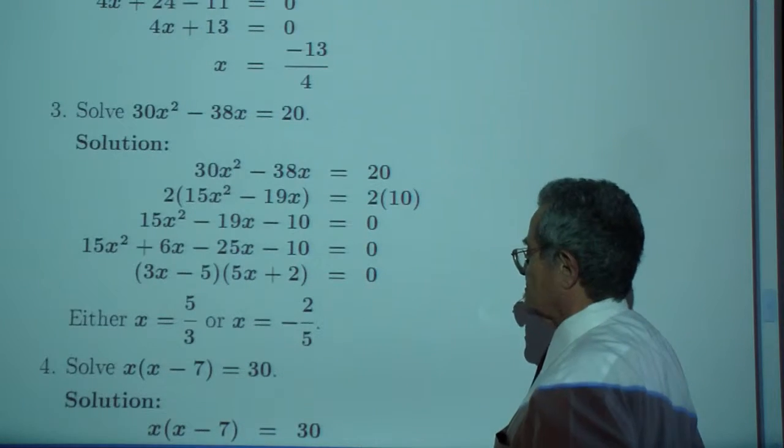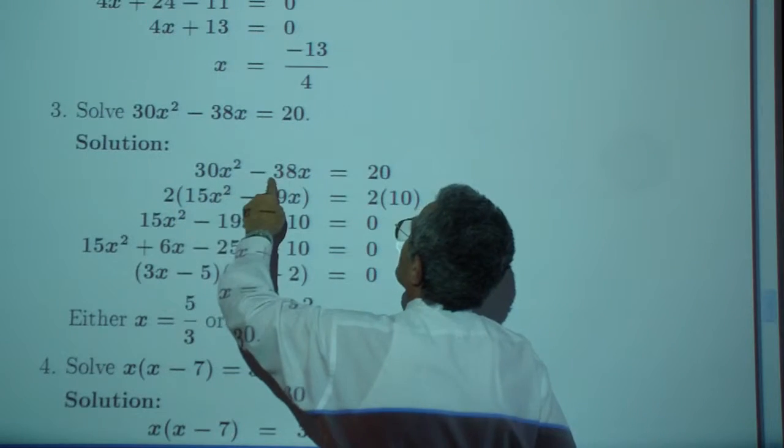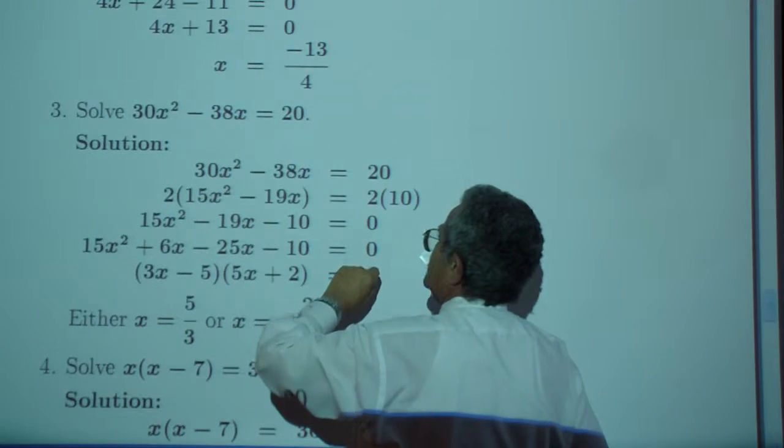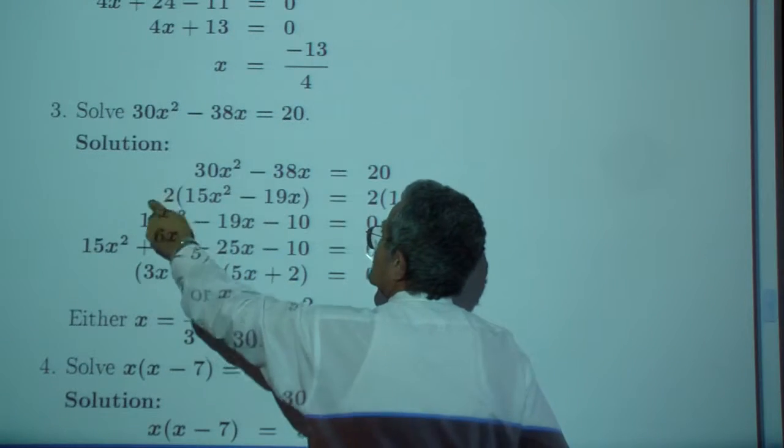Exercise three. You are given 30X squared minus 38X. Subtract 20 from both sides. Factor our greatest common factor, two. Divide by two.